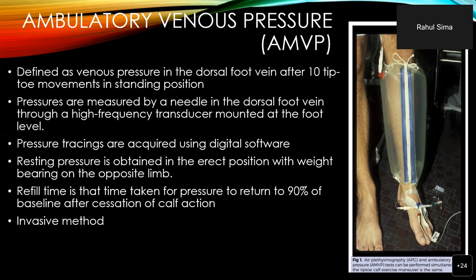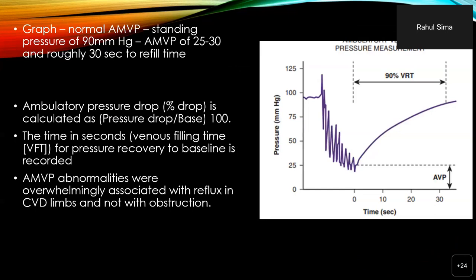This test is an invasive measure. The picture on the right shows both an air plethysmograph and ambulatory venous pressure being measured at the same time. On the right is a normal graph of ambulatory venous pressure where the normal pressure when standing is roughly about 90 mmHg, and the 10 tiptoe movements bring down the pressure to roughly 25 to 30 mmHg. The time then taken for refill to 90% of the baseline is the venous refill time. Ambulatory pressure drop is the percentage calculated on the base, and venous refilling time is the time in seconds for venous refill to occur.